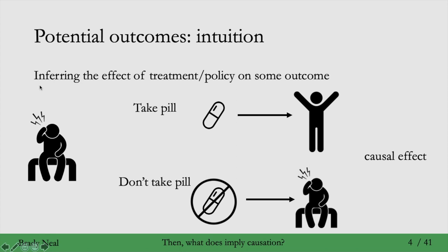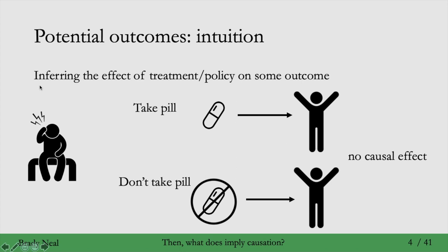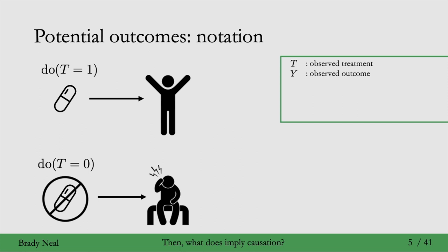But what if, when you don't take the pill, your headache still goes away? Then would you say that the pill has a causal effect on your headache? Probably not — it doesn't seem like the pill caused your headache to go away. So that was the basic intuition for potential outcomes. Now we'll get a bit more specific with some notation. We'll use T to denote the observed treatment and Y to denote the observed outcome, shown on the right in this green box.